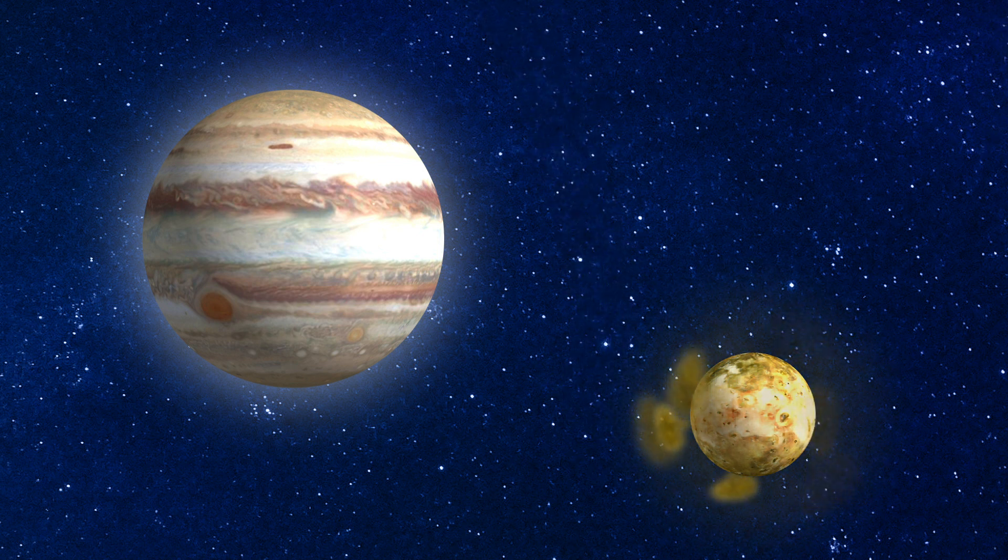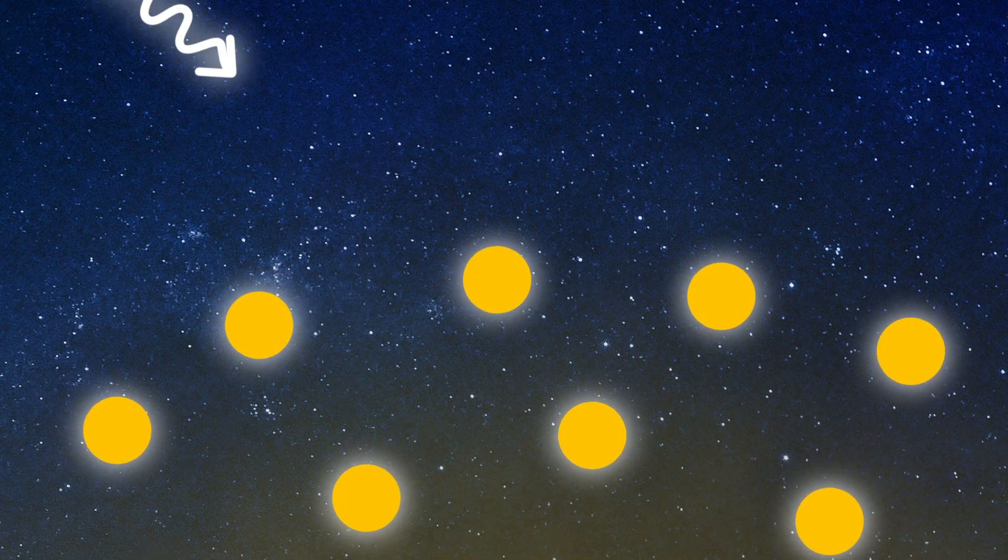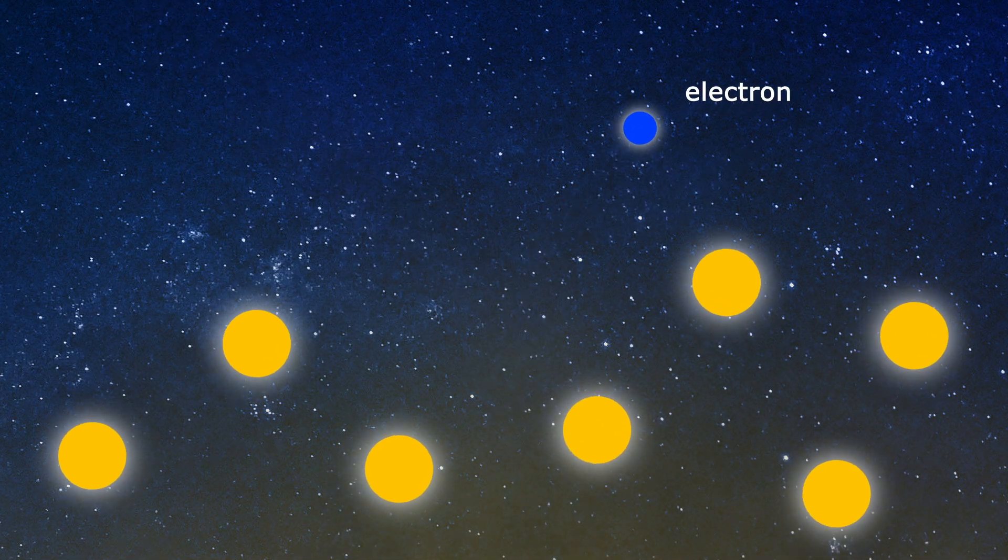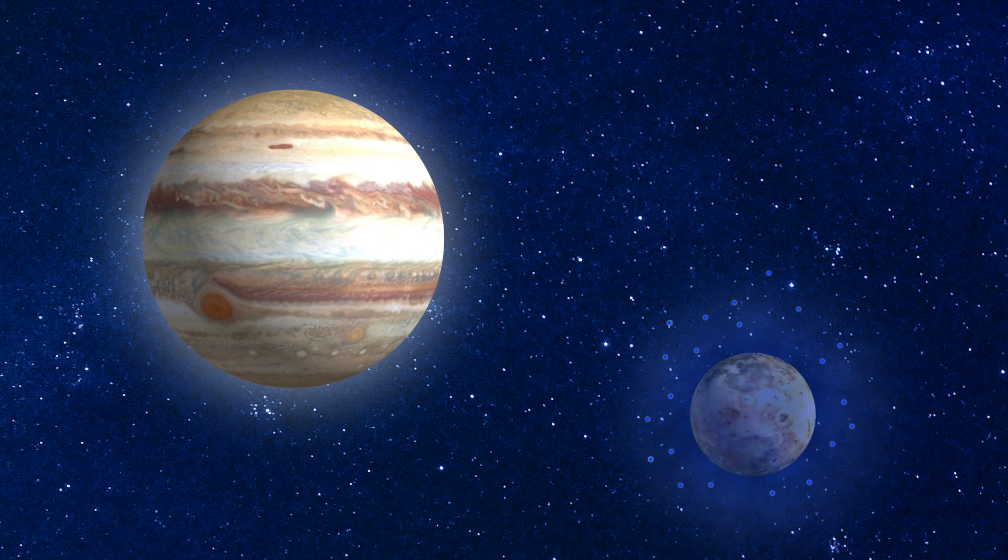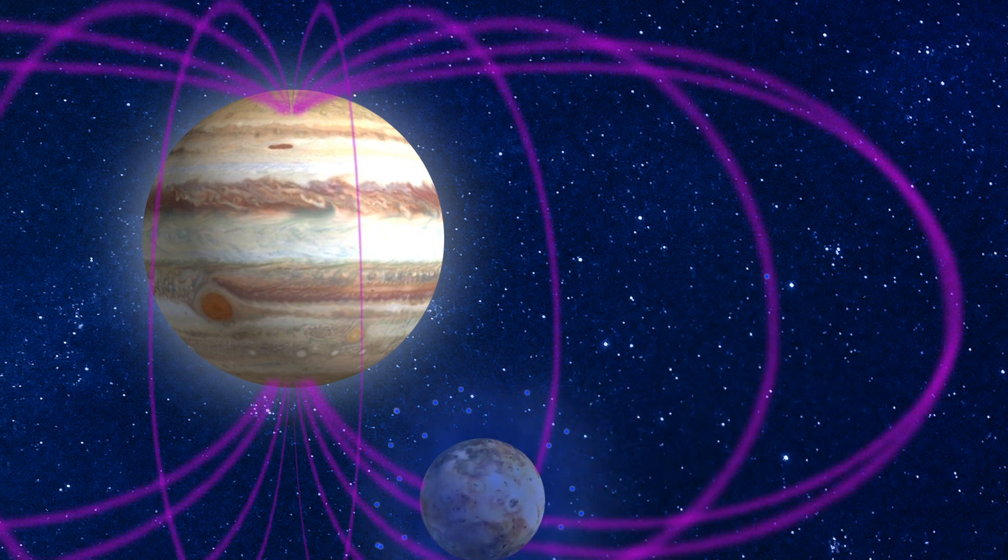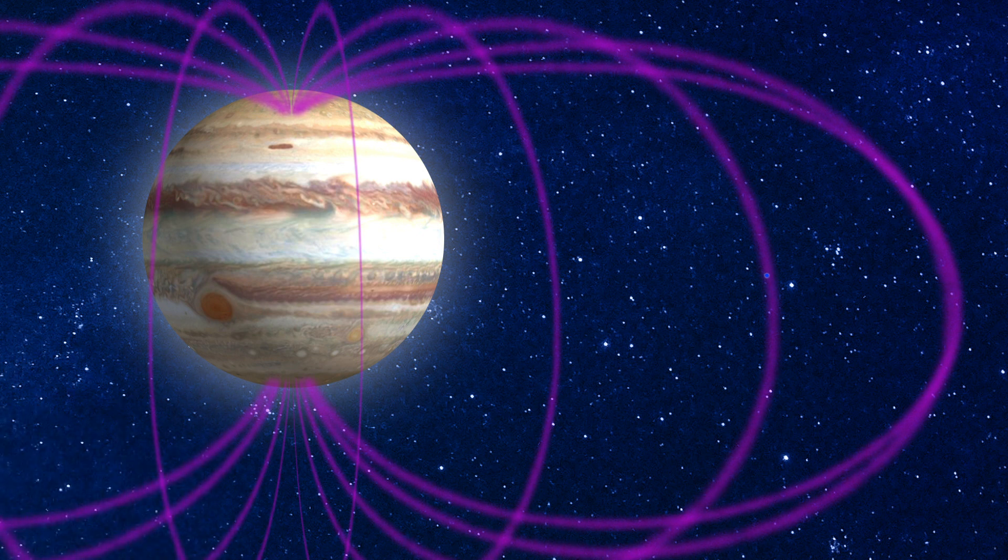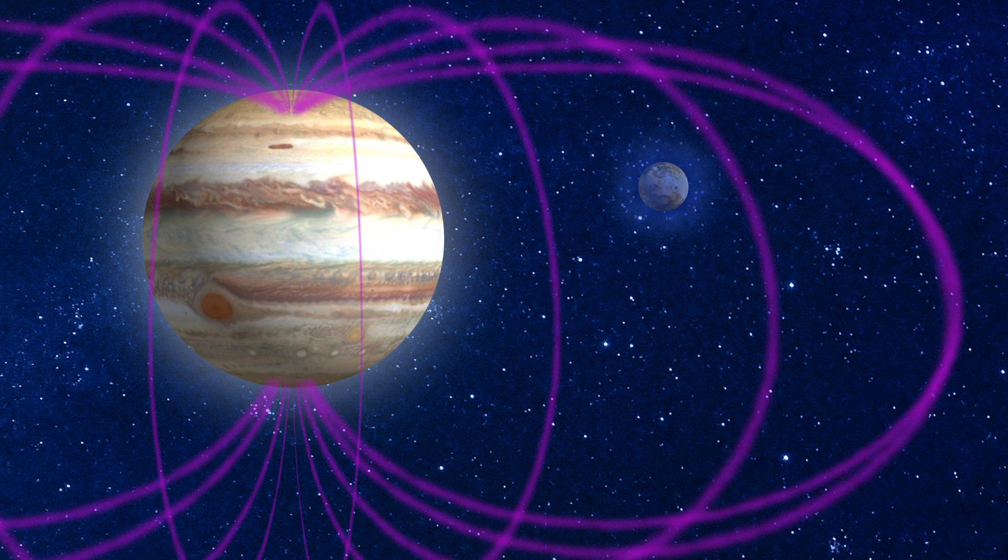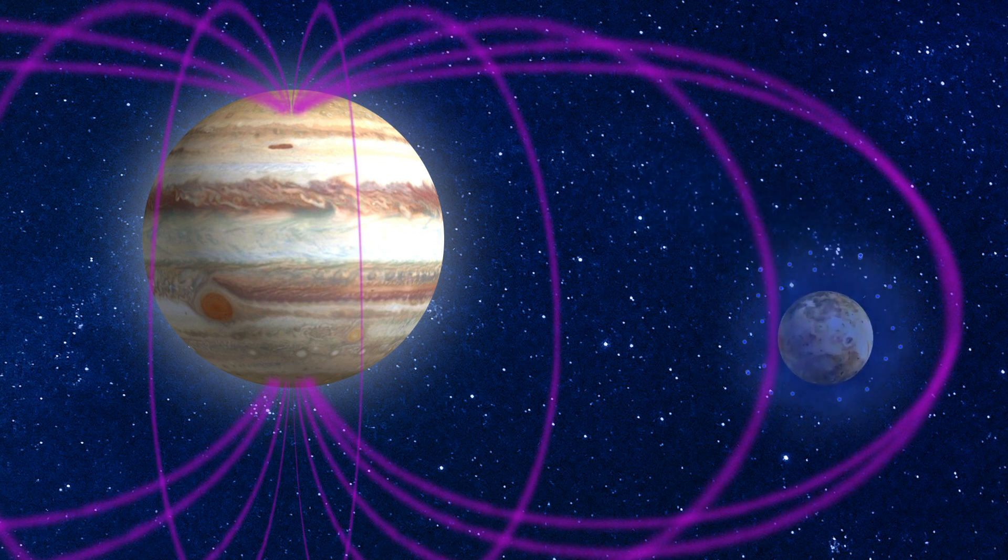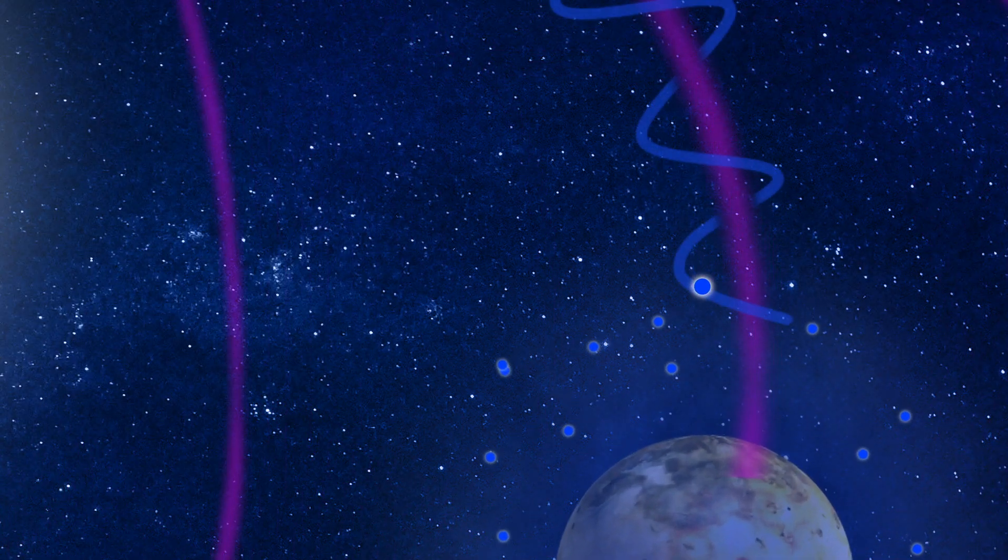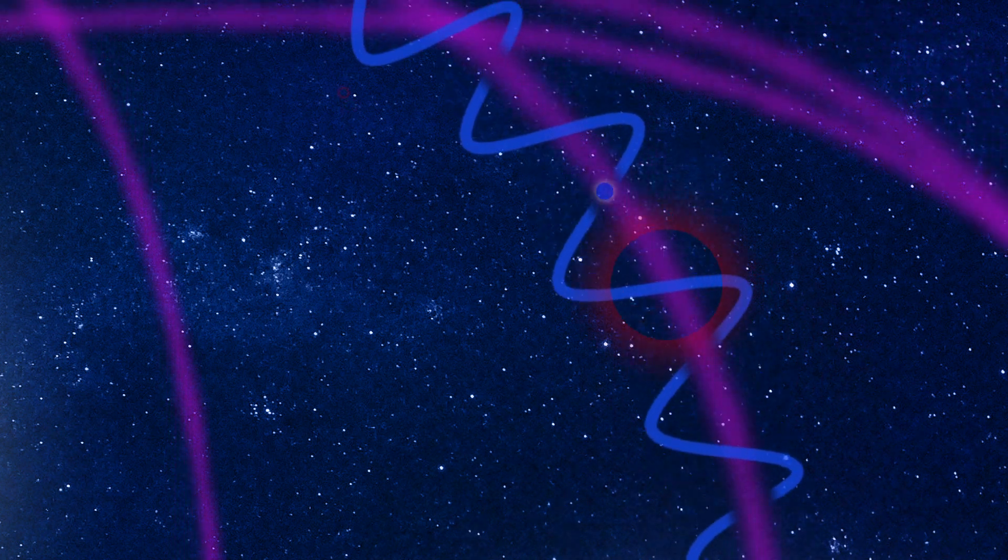The constant volcanic eruptions give Io an atmosphere, and radiation knocks atoms into charged electrons and ions. This means that Io's atmosphere is conducting electricity while it moves through Jupiter's strong magnetic field. An electrical conductor moving through a magnetic field causes a voltage to build up. The voltage pushes electrons to move along the magnetic lines, spiraling around them and emitting radio waves along the way.